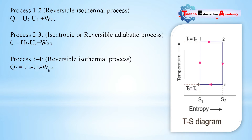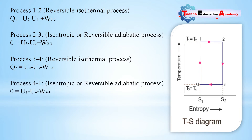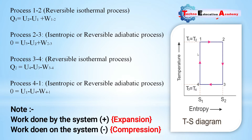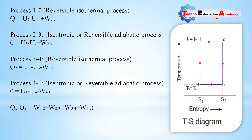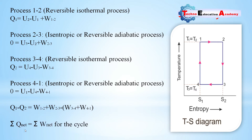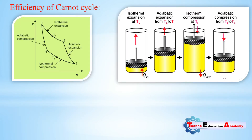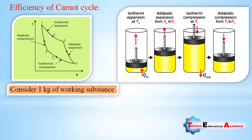For process 4 to 1, which is an isentropic compression process, heat transfer is zero. Adding the left-hand side and right-hand side terms together — taking positive sign for heat supply and negative sign for heat rejection — the internal energy terms cancel (U2 minus U1 plus U4 minus U3 equals zero for a cycle). The net heat transfer equals the net work done for the cycle.